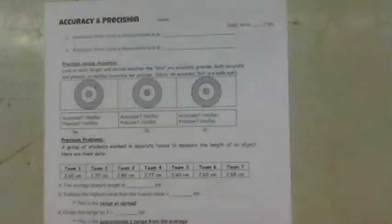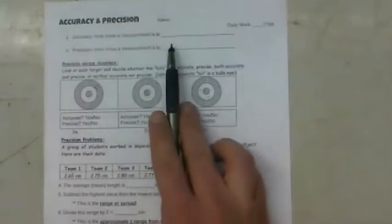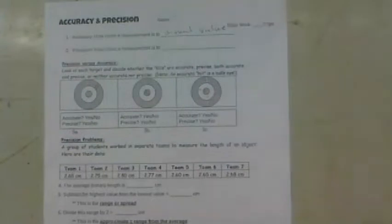Today we're going to look at accuracy and precision. These are terms you've probably heard a lot and maybe thought they mean the same thing, but they actually mean different things. Accuracy is how close a measurement is to the actual value, where precision is how repeatable those values are or how close all the values are together.